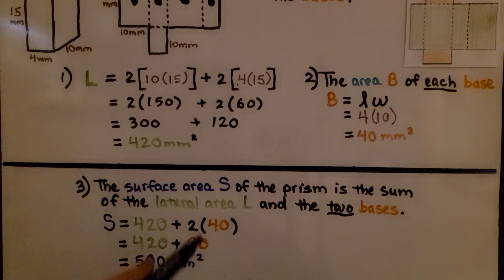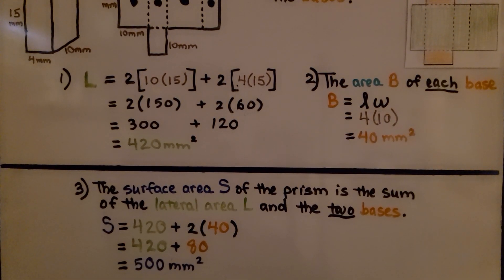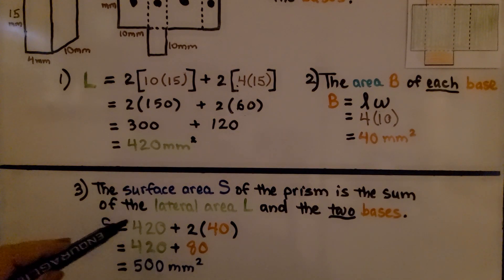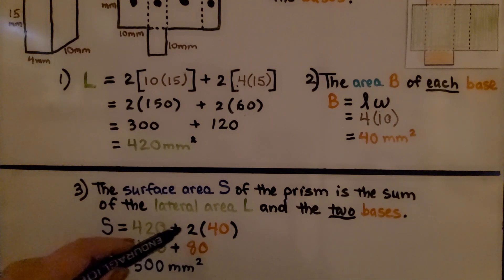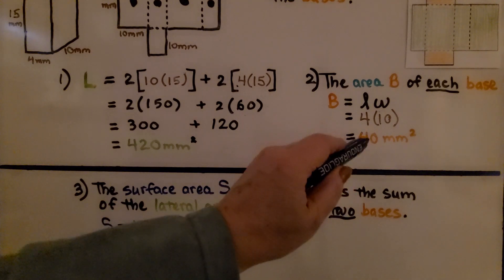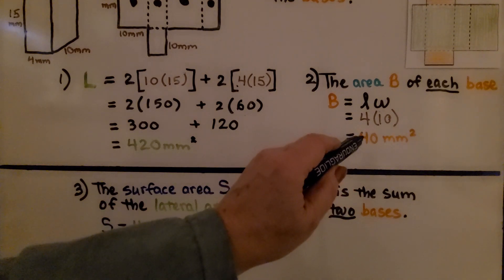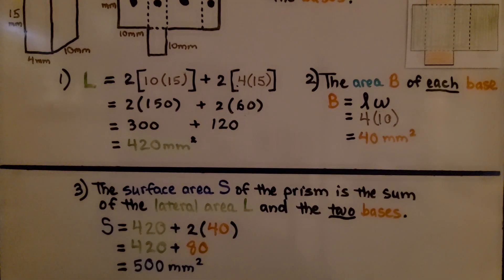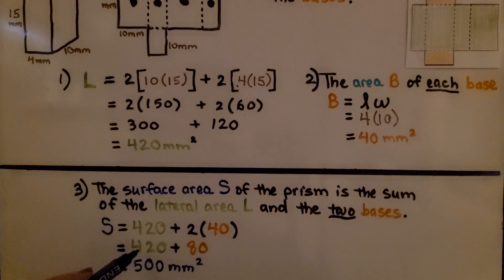The surface area S of the prism is the sum of the lateral area L and the two bases. So S is equal to 420 plus 2 times 40, because there are two bases — a top and a bottom. That means the surface area is equal to 420 plus 80, which is 500 millimeters squared.